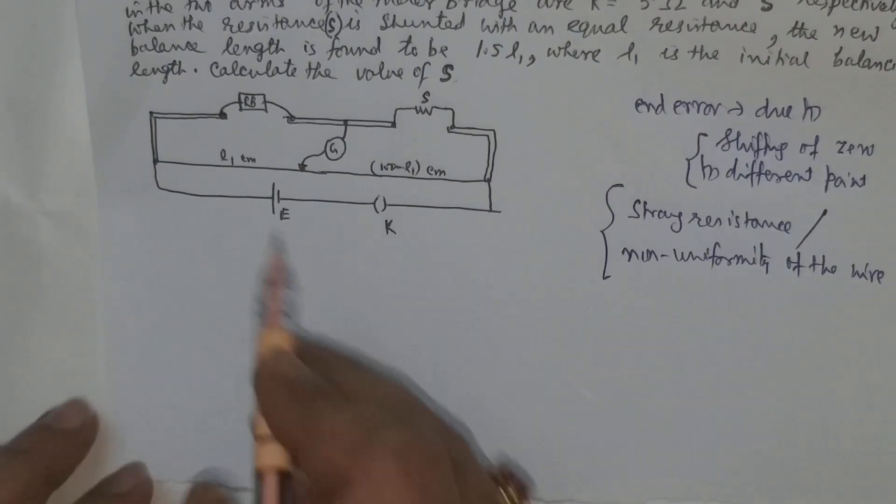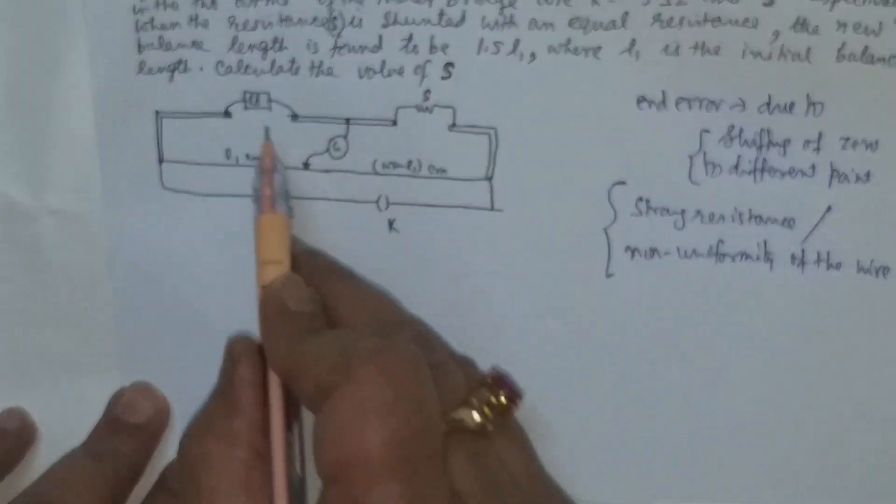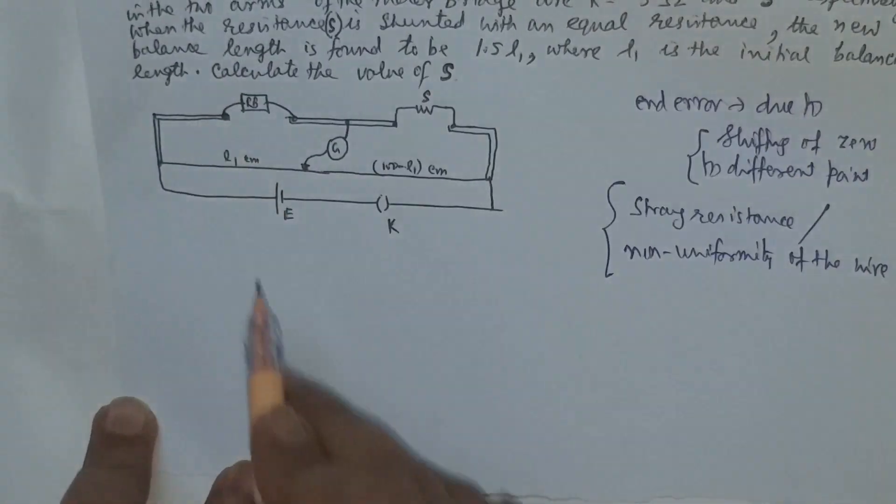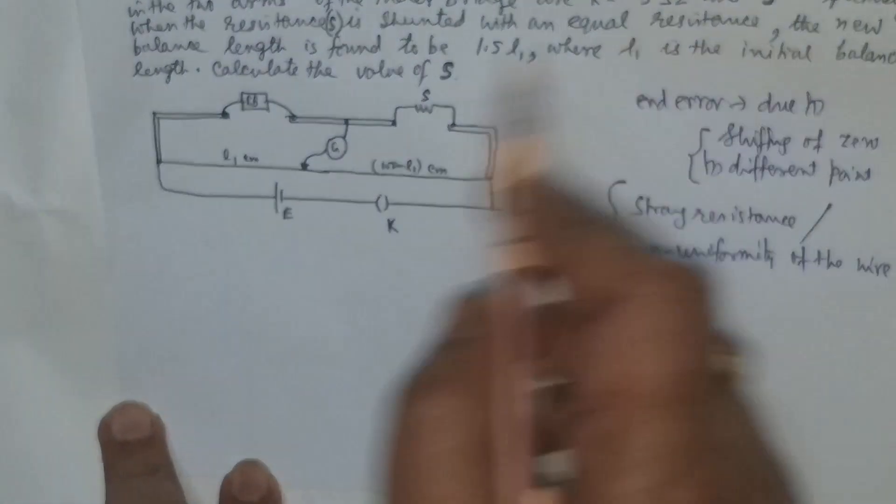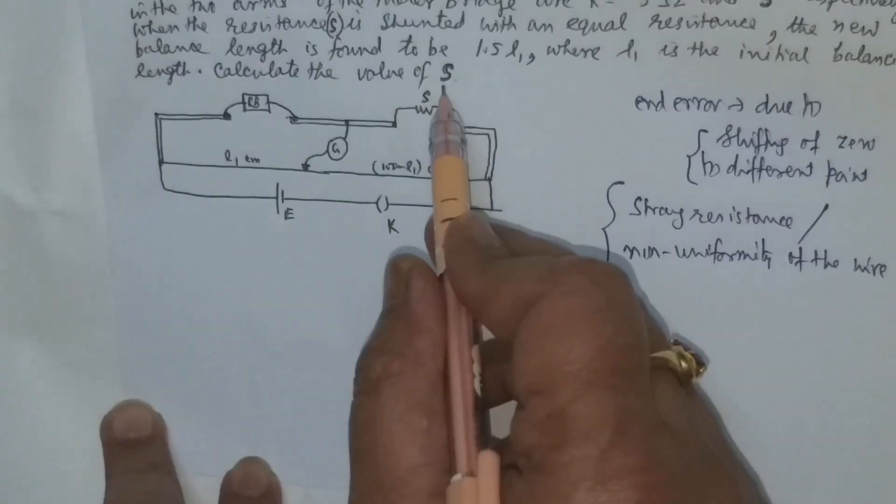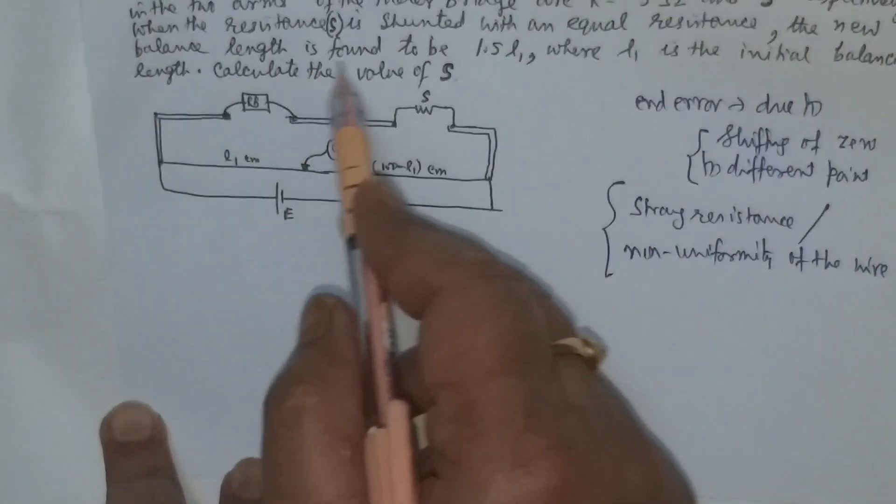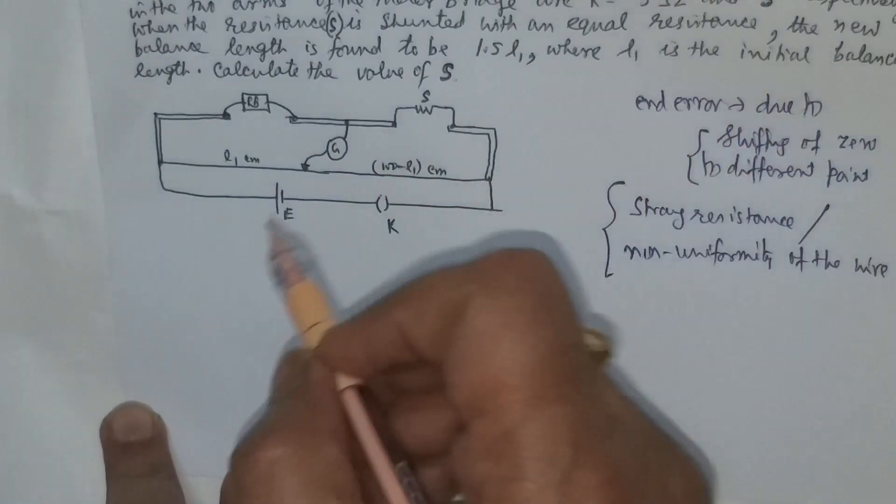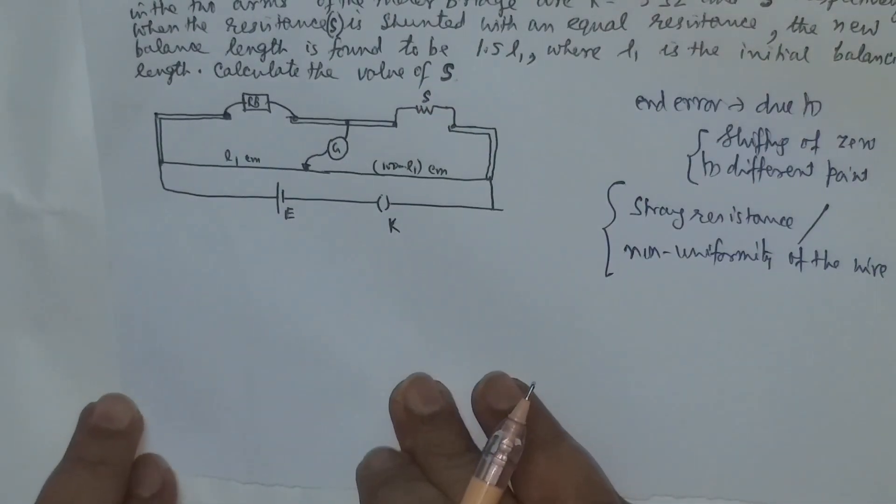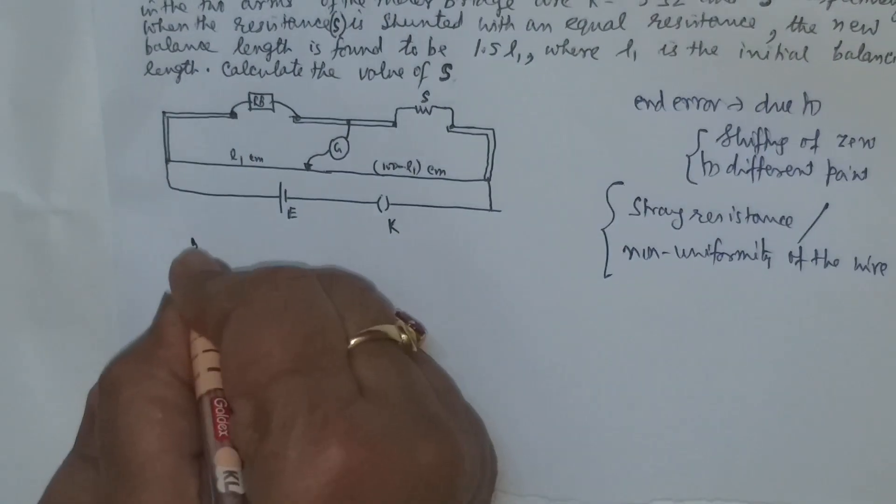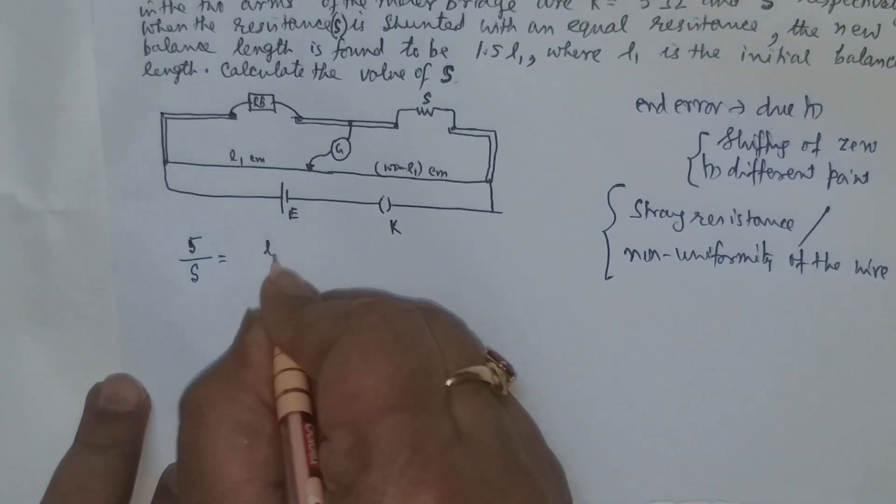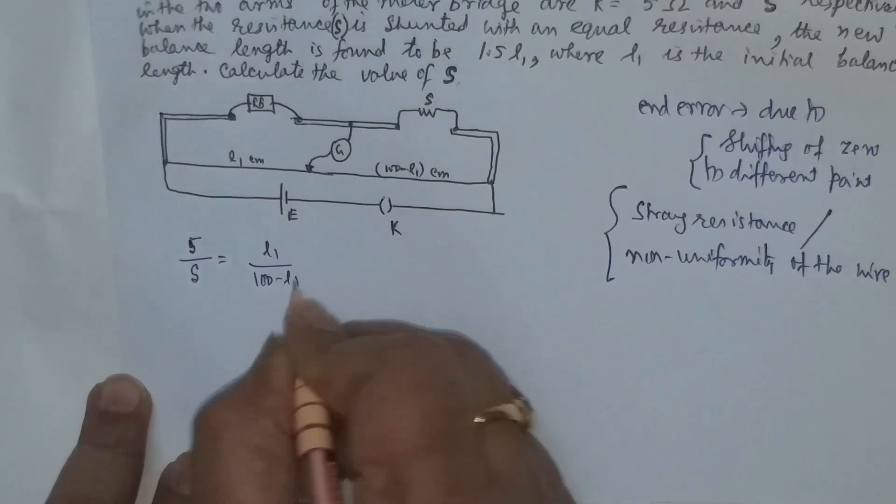In these two arms of the meter bridge, R equals 5 ohm and this resistance is S with balancing length L1. When resistance S is shunted with an equal resistance, meaning another S is connected in parallel, the new balancing length is 1.5 L1. Calculate the value of S. So 5 by S will be equal to the ratio L1 divided by 100 minus L1.